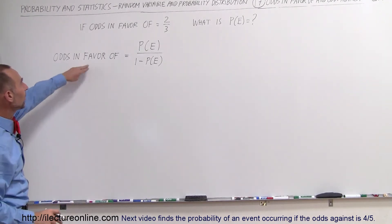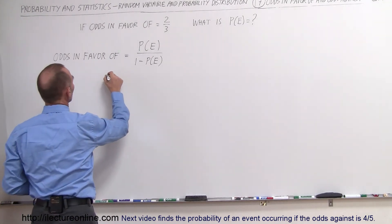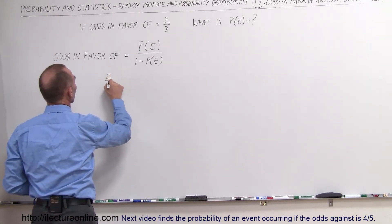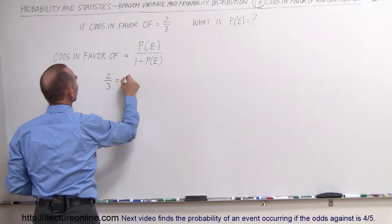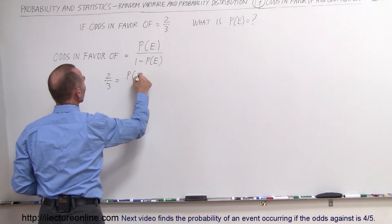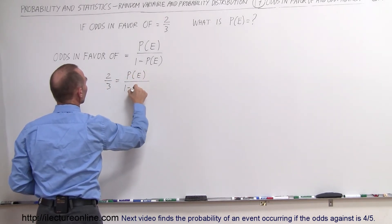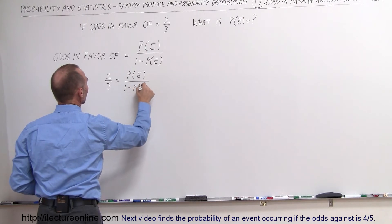We're going to replace this with two-thirds, so two-thirds is equal to the probability of the event occurring divided by one minus the probability of the event occurring.